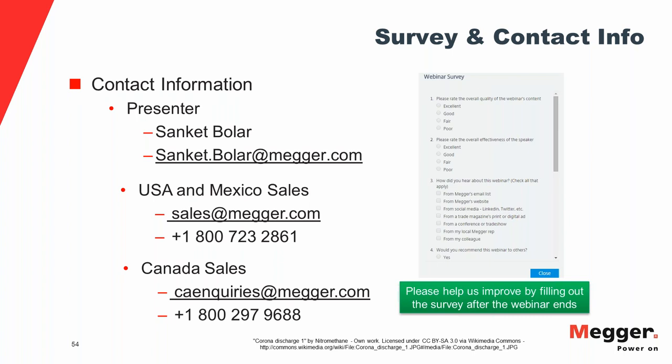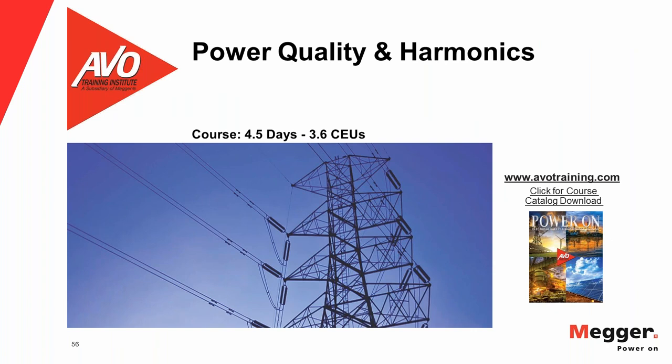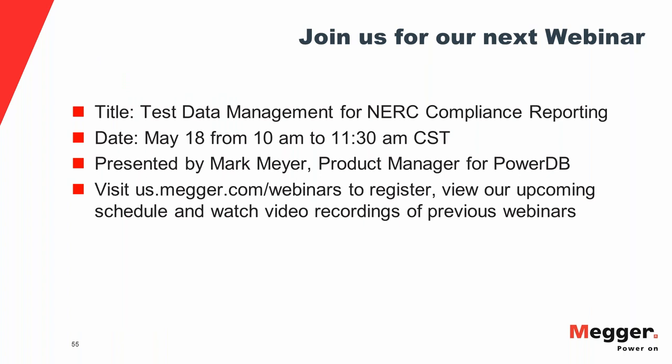That concludes our Q&A session. As you close your webinar window, a survey should appear — we'd appreciate your feedback to improve future webinars. The survey also has a field where you can request a demo or quote of Megger products. We also have a hands-on power quality and harmonics training course from AVO Training Institute at avotraining.com — with over 50 years of experience and highly knowledgeable instructors. We'll try to answer remaining questions by email for those who registered. Thank you all for attending, and have a great and safe weekend.